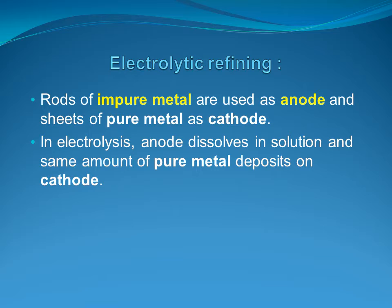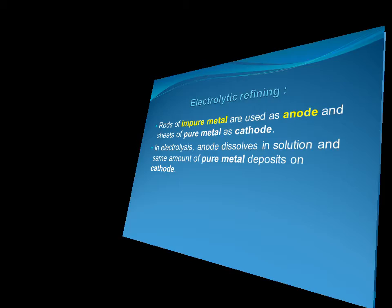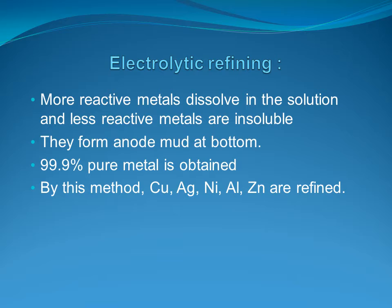Electrolytic refining is one of the most commonly used methods of refining. Impure metals are refined in an electrolytic bath containing an aqueous solution of their salts. The rods of impure metal are used as anode and thin sheets of pure metal as cathode. During electrolysis, metal from the anode dissolves in the solution while the same amount of pure metal deposits on the cathode. Impurities like more reactive metals dissolve in the solution, while less reactive metals are insoluble and form anode mud at the bottom. 99.9% pure metal is obtained in this process.